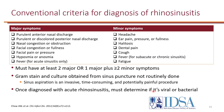From the IDSA guidelines for rhinosinusitis, the diagnosis is based on major and minor symptoms. A patient must have at least two major criteria, or one major plus two or more minor symptoms, in order to be diagnosed with rhinosinusitis. Gram stain and culture from sinus puncture is not routinely done because it's invasive, time-consuming, and painful. Importantly, this criteria does not distinguish whether the infection is bacterial or viral, so that must also be determined.